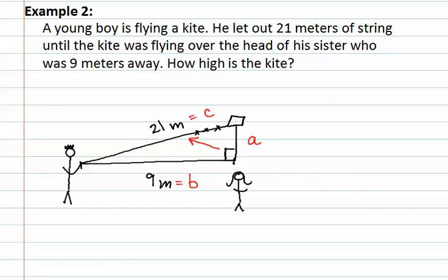We now have all the information needed to use the Pythagorean theorem. A squared plus B squared equals C squared. Since we do not know A squared, we leave a blank. We do know that B is nine, so we have nine squared.